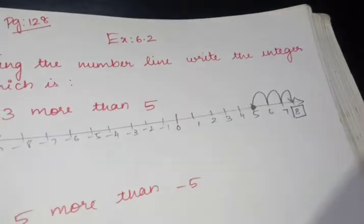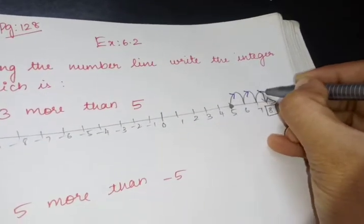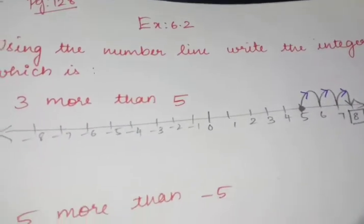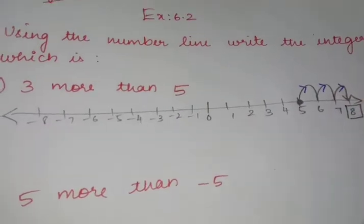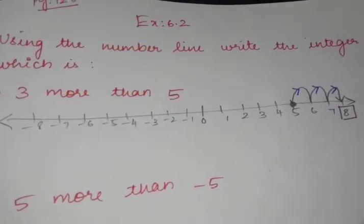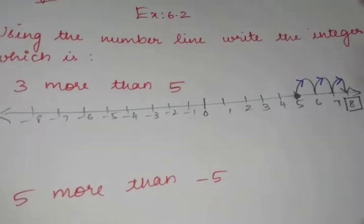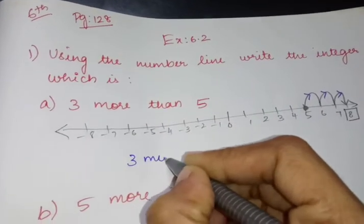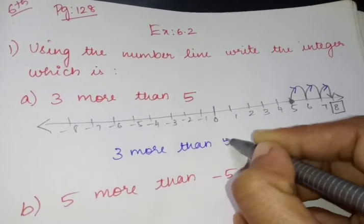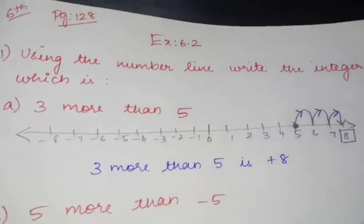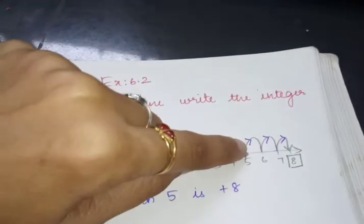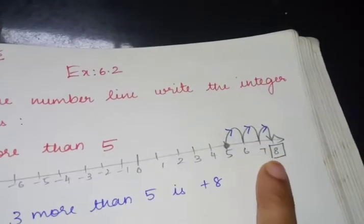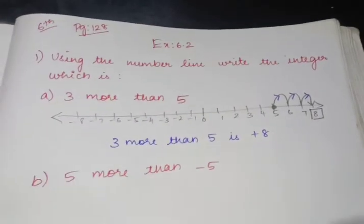You are moving towards the right side. The arrow mark should be indicated — it is very, very important. Because you are moving towards the right side, only if you indicate the arrow mark can I know whether you are moving right or left. So what is the answer? 3 more than 5 is plus 8. You should write plus 8. I am moving from 5 — 1, 2, 3 digits — reaching plus 8. This is how you should find it.